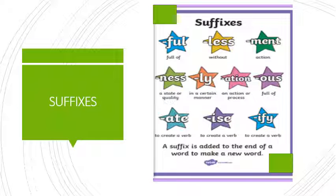Then you have suffixes, and I've added the suffixes with their meanings underneath each star: -ful, -less, -ment, -ness, -ly, -tion, -ous, -ate, -ise, and -ify. The first one means full of, then without, then action or a state of quality in a certain manner or process, then full of. The last three — -ate, -ise, and -ify — are used to create a verb.